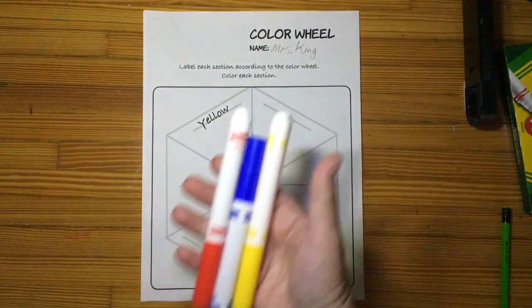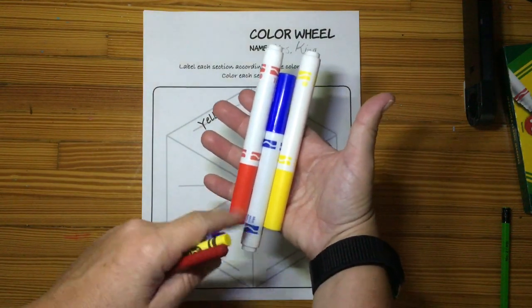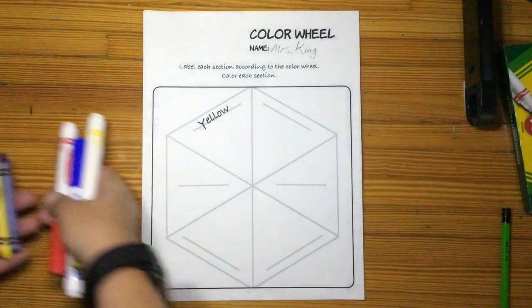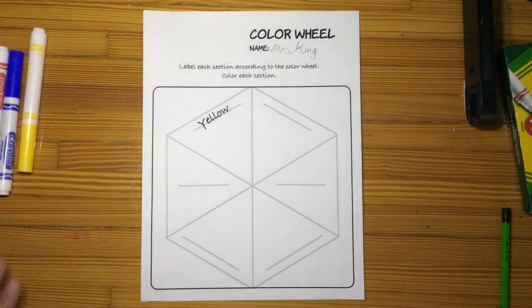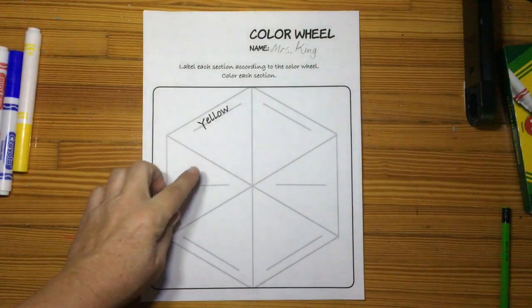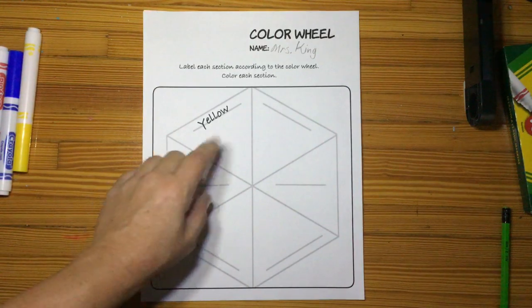You will need your primary color markers: red, blue, and yellow, and primary color crayons. We have to work with our markers first because we are going to be coloring over our markers with crayons, and it needs to be dry.